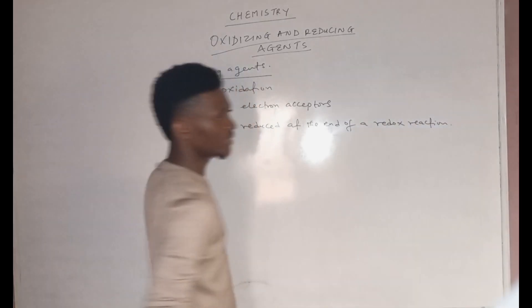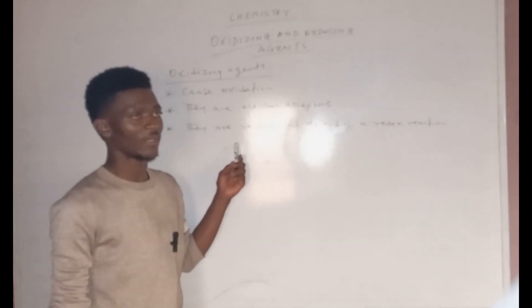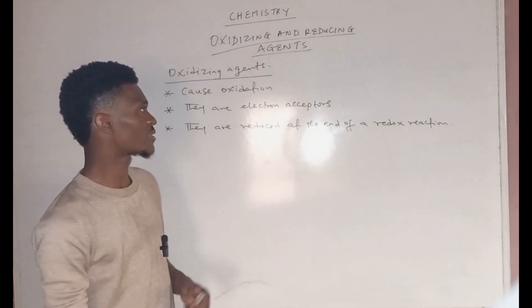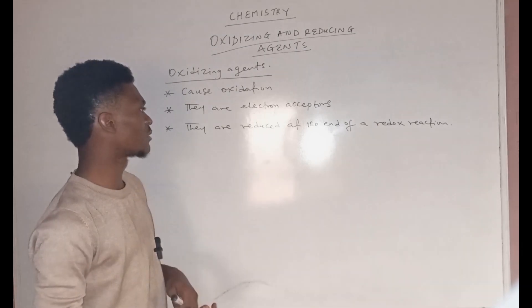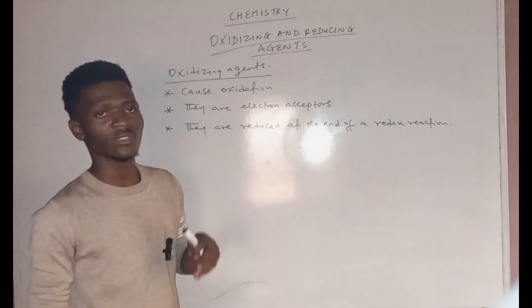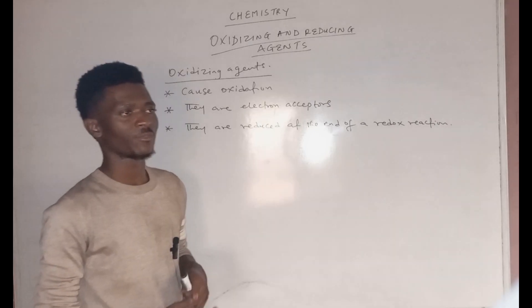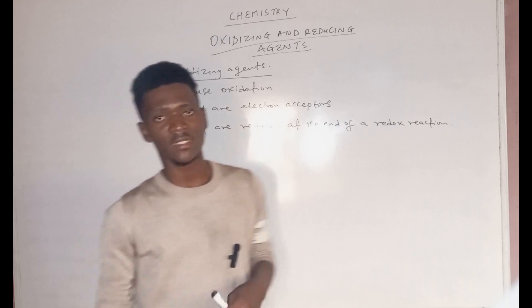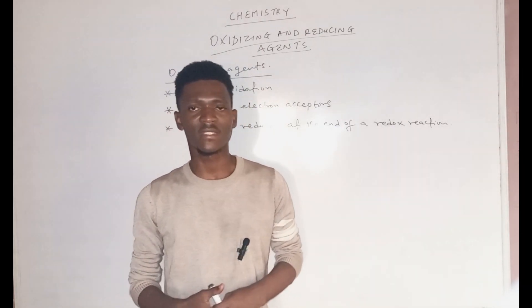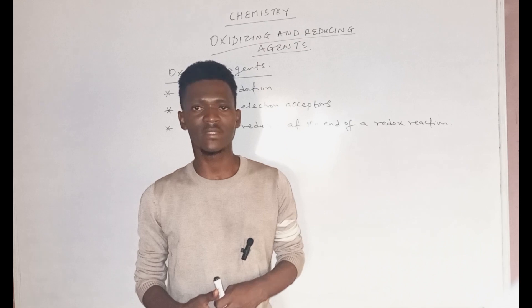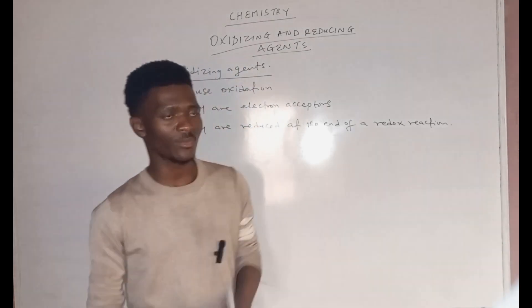So these are the three parts you need to consider when considering oxidizing agents: firstly, they cause oxidation in a redox reaction; secondly, they are electron acceptors; and lastly, they are reduced at the end of a redox reaction. That is even why in some tests they will define oxidizing agents as agents that are usually reduced at the end of a redox reaction.